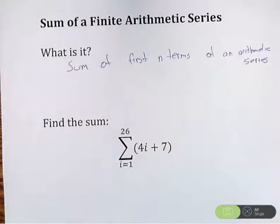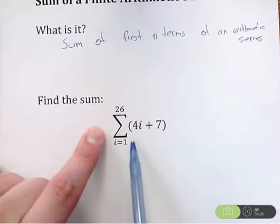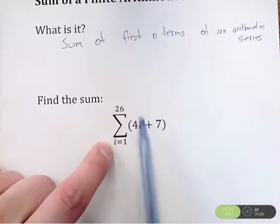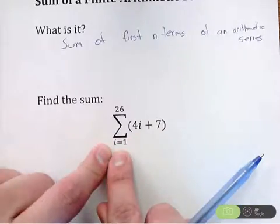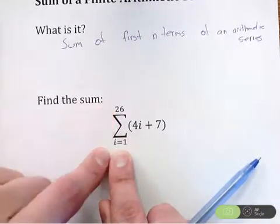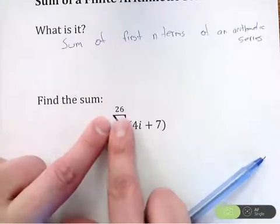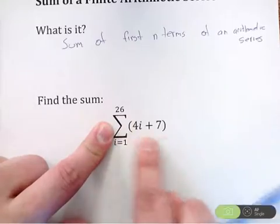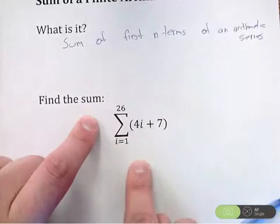Now we've found sums before. Basically what's going on here, and you can especially see it in this example, if I wanted you to find the sum, we've done problems like this before. You need to find the sum of the series from i equals 1 all the way to 26. So you need to figure out i is 1, i is 2, i is 3, i is 4, all the way up to 26. That's 26 terms you would have to find, and then add up all 26 of those terms to find the whole sum.